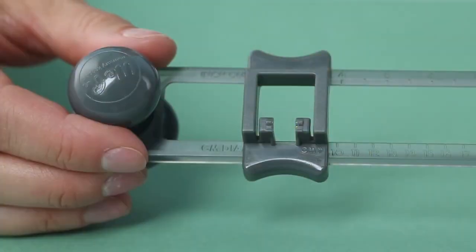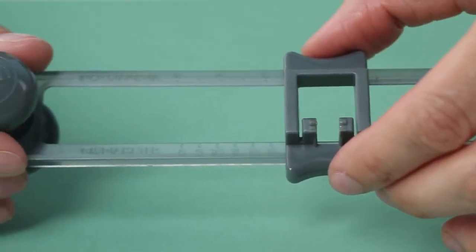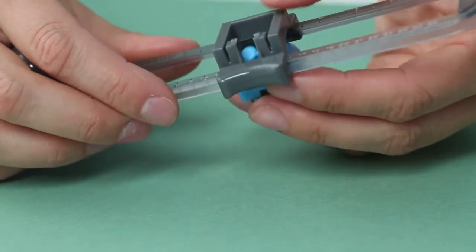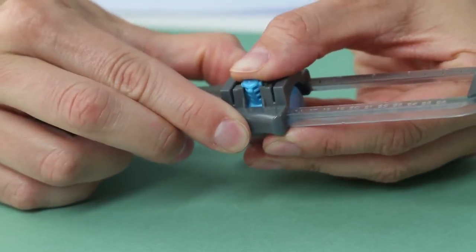First, slide the guide into the desired measurement. Next, snap the head into the guide. This locks so it won't slide.